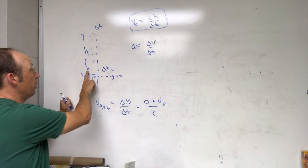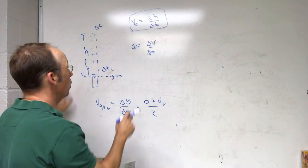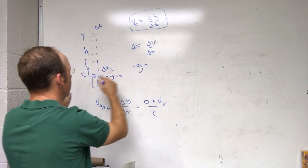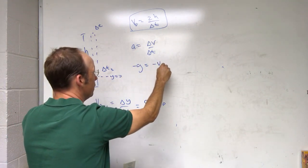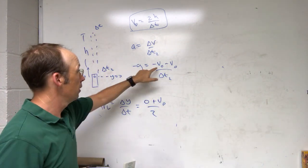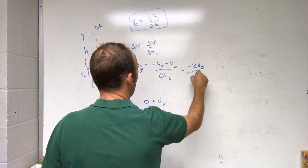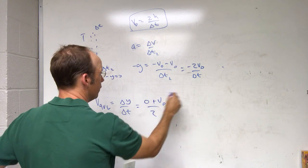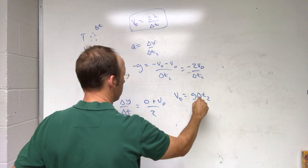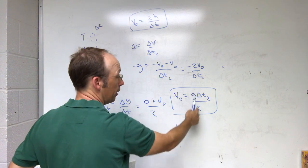The key trick is: if I launch the ball upward at speed v0, when it returns to the same height it's moving downward at the same speed but in the opposite direction, so the final velocity is negative v0. Using average acceleration equals change in velocity over change in time: negative g equals (negative v0 minus v0) over delta-t₂, which gives negative 2v0 over delta-t₂ equals negative g. Solving for v0 gives v0 equals g times delta-t₂ over 2.